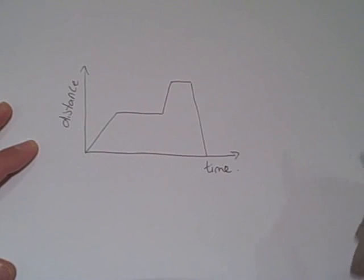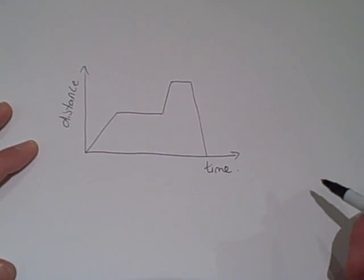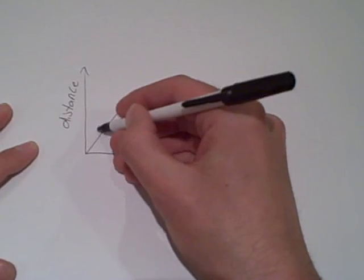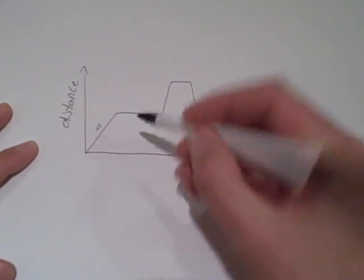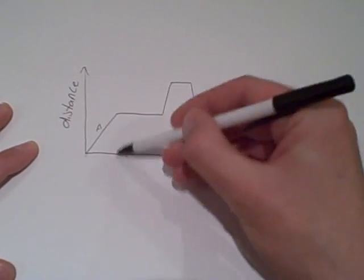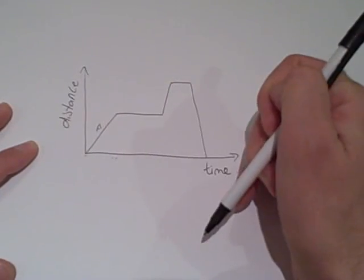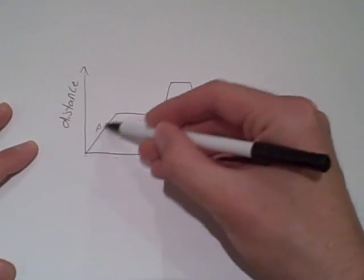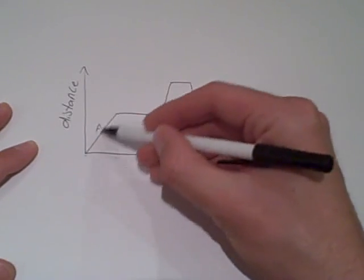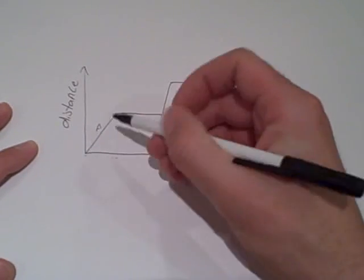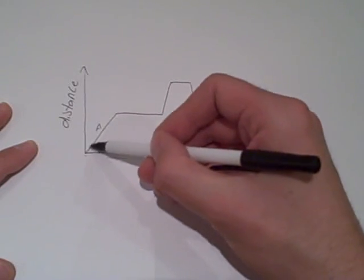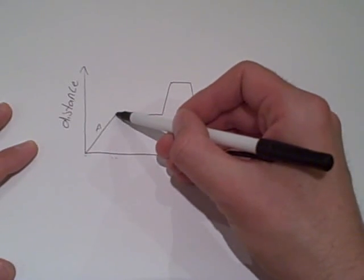Let's think about what each of these sections would mean. In section A, as time passes, the distance is going up. Because that line is straight with a constant gradient, we know the speed is constant. So this would be constant speed.